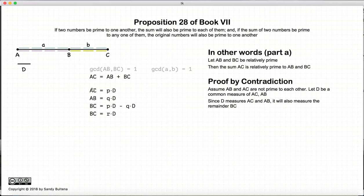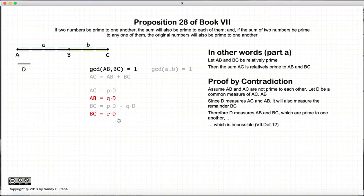So now we have d measures AC, d measures AB, and d also measures BC. So therefore, we have that AB and BC are measured by a common number d, d not being equal to one, and since AB and BC were defined as relatively prime, this cannot be true. So hence, that is our contradiction.